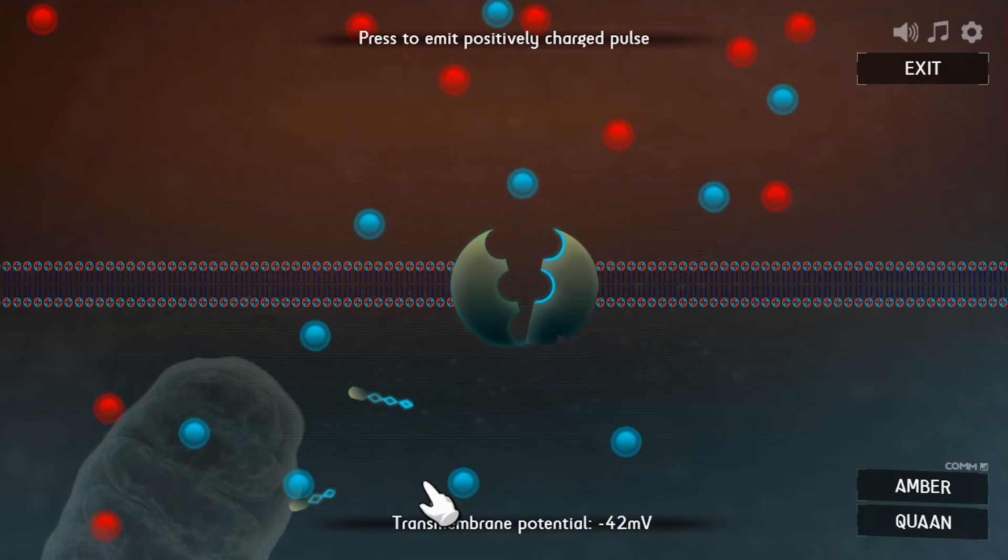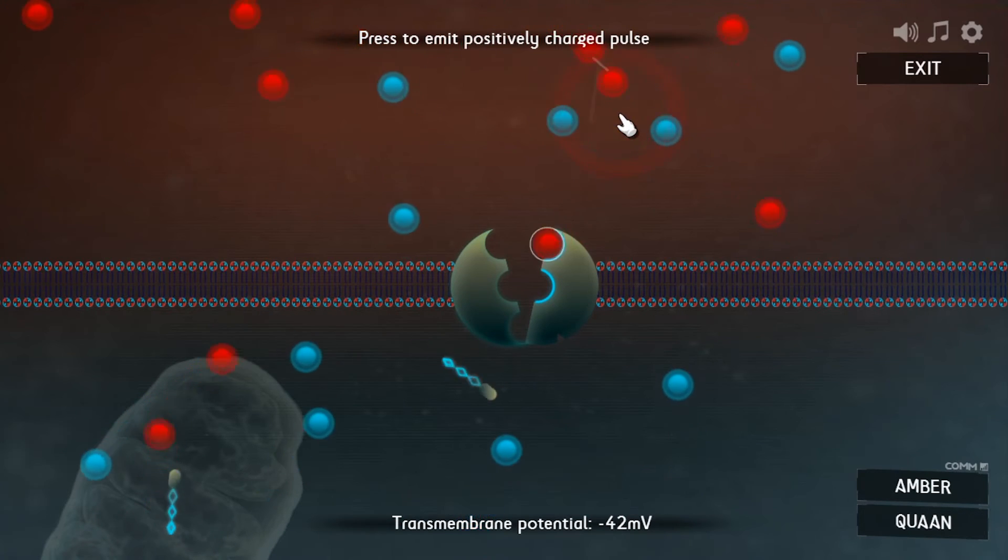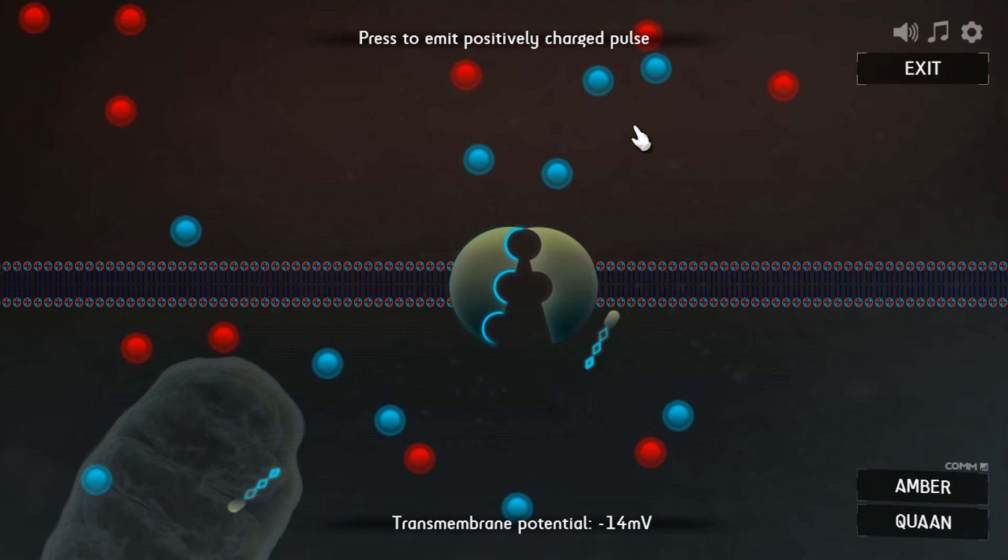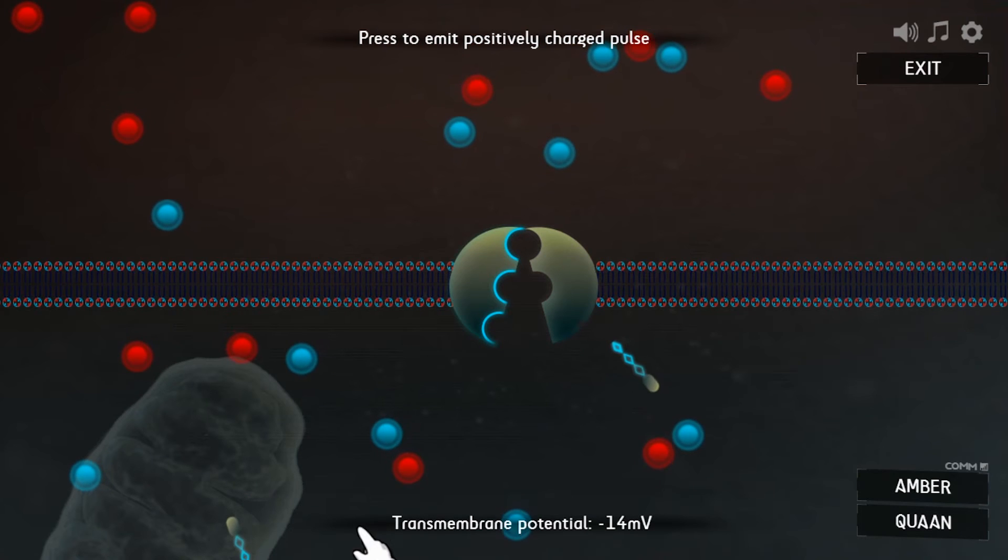When the enzyme pump flips sides it changes shape. Now it's only got two negative charged holes so it can only take two ions back inside the cell. Once it's got two positives in it it automatically shoots them back into the cell. No ATP needed.